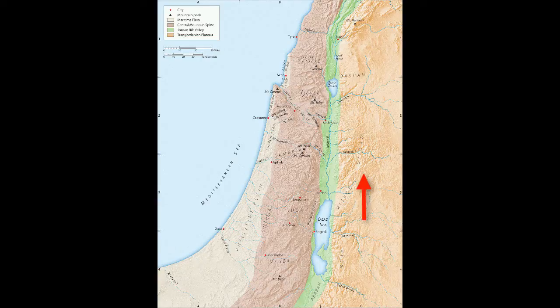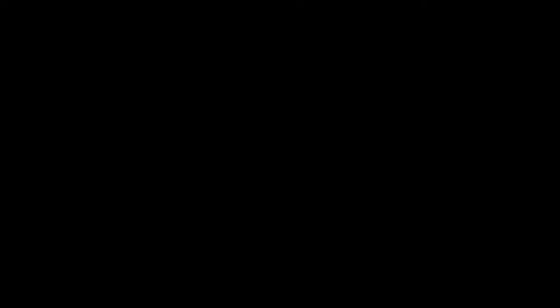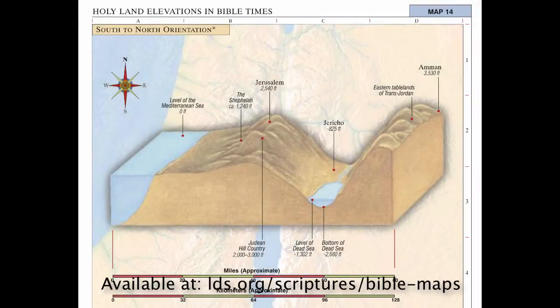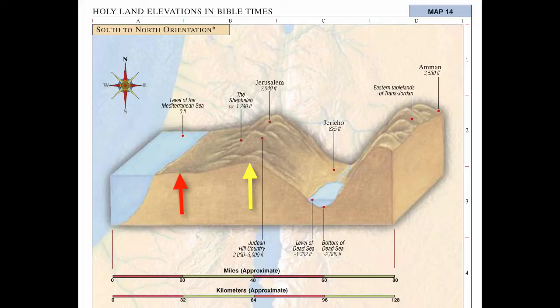To the east again, we have what's known as the Transjordan Plateau. This would have been the land of Moab and Ammon — enemies of Israel — though actually two and a half tribes of Israel settled over here. But this was pretty rugged territory. To review: we have the coastal plain, the central mountain spine, dropping down to the Jordan Rift Valley, and the Transjordan Plateau.